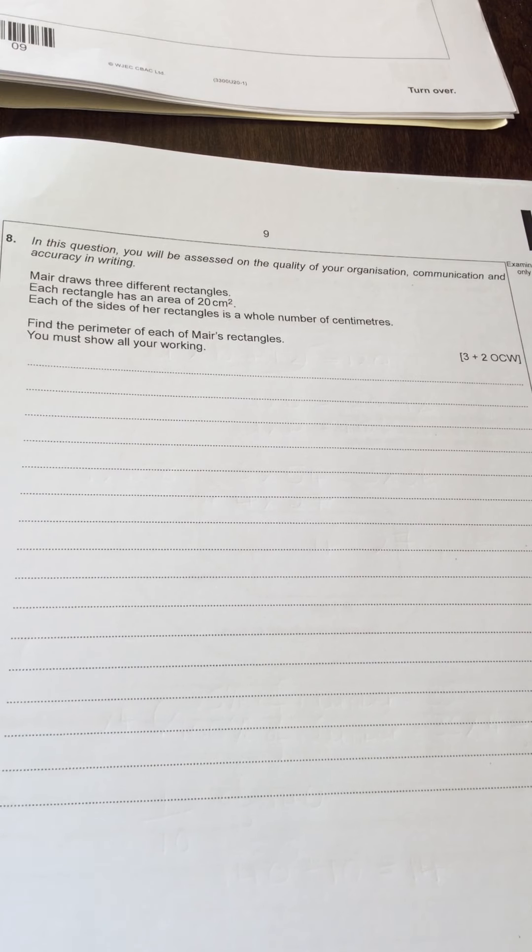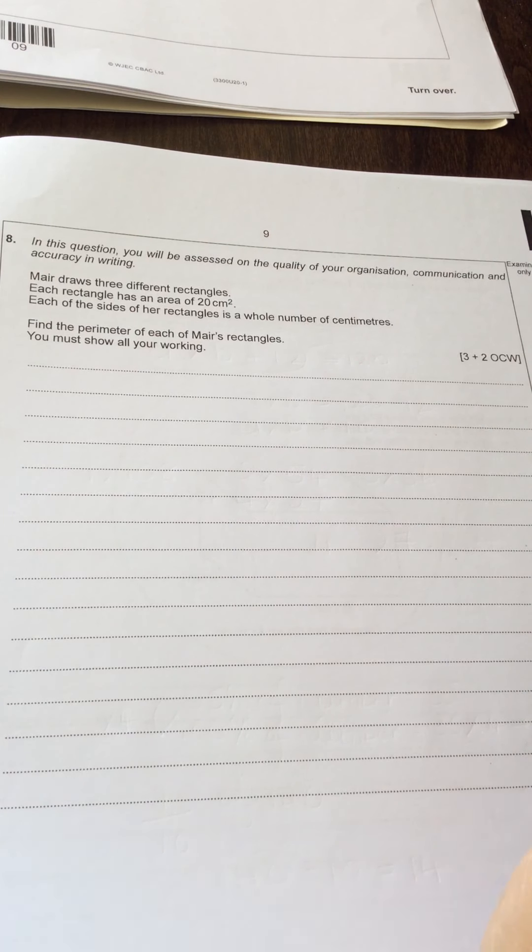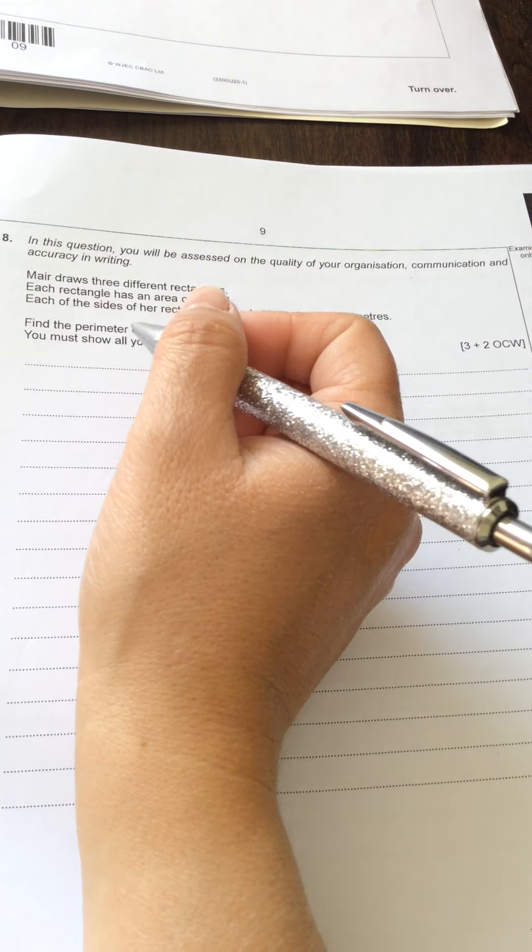So we need to look firstly at ways of making 20 by multiplying.